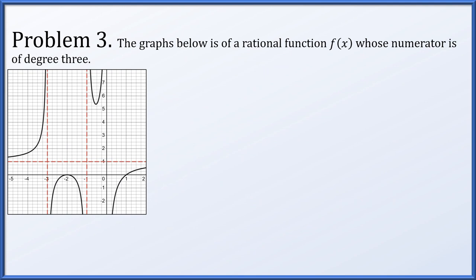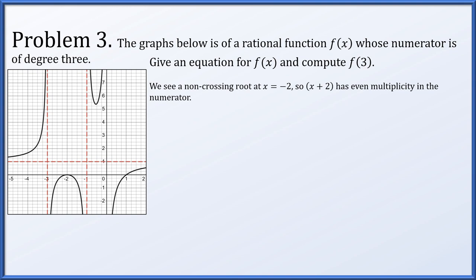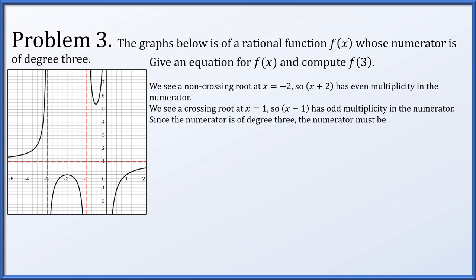Problem three: given a graph of a rational function whose numerator is degree 3, we find an equation for f(x) and compute f(3). From the graph, f(3) appears slightly less than 1. There is a non-crossing root at x = −2, so (x + 2) has even multiplicity, and a crossing root at x = 1, so (x − 1) has odd multiplicity. Since the numerator is degree 3, it must be a constant times (x − 1)(x + 2)².